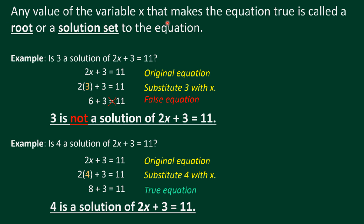Any value of the variable x that makes the equation true is called a root or solution set to the equation. For example: is 3 a solution of 2x plus 3 equals 11? We substitute x with 3: 2 times 3 plus 3 equals 6 plus 3, which is 9 — and 9 is not equal to 11. So 3 is not the solution; that is a false equation.